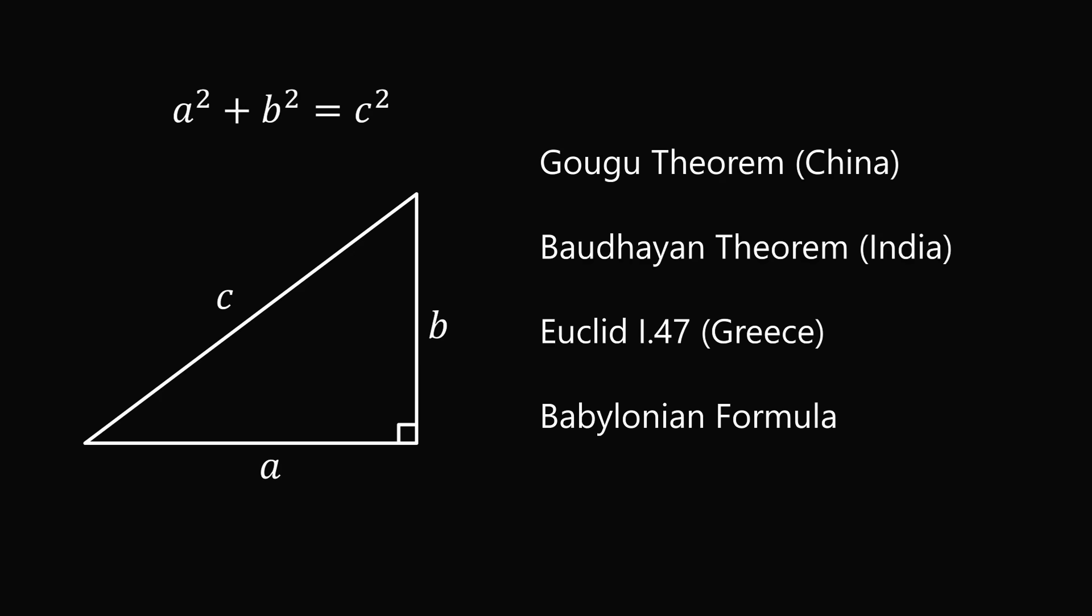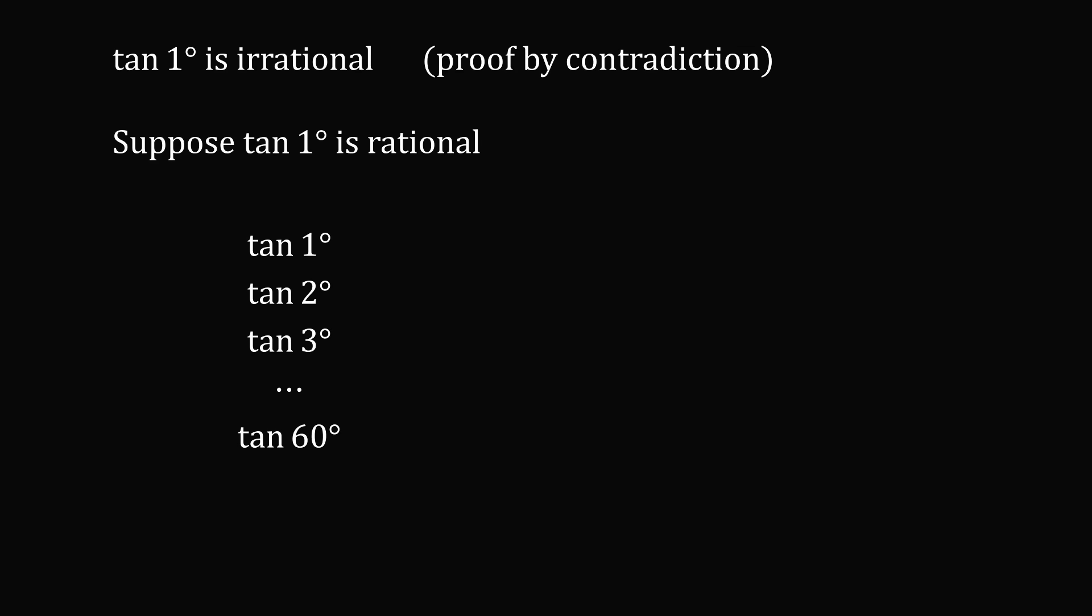I don't want to go too far off on a tangent, so let's return to the original question. So, we are going to show that tangent of one degree is irrational. And like the other proof, we are going to show this by contradiction. So, let's suppose instead that tangent of one degree is a rational number. An important part in this proof is that tangent of one degree, tangent of two degrees, tangent of three degrees, all the way up to tangent of 60 degrees, will all be non-zero and well-defined values.